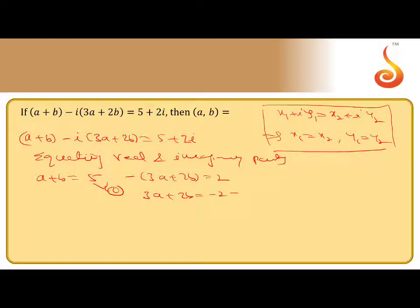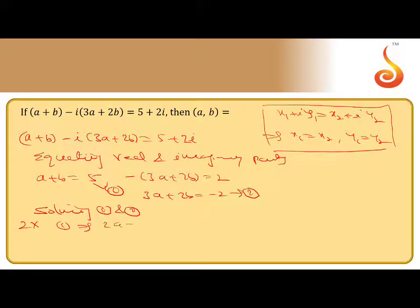Hold as equation 1 and equation 2. Solving equations 1 and 2 by simultaneous equations. The first equation, a plus b equal to 5, is multiplied by 2, so that 2a plus 2b equal to 10. And the second equation is 3a plus 2b equal to minus 2.